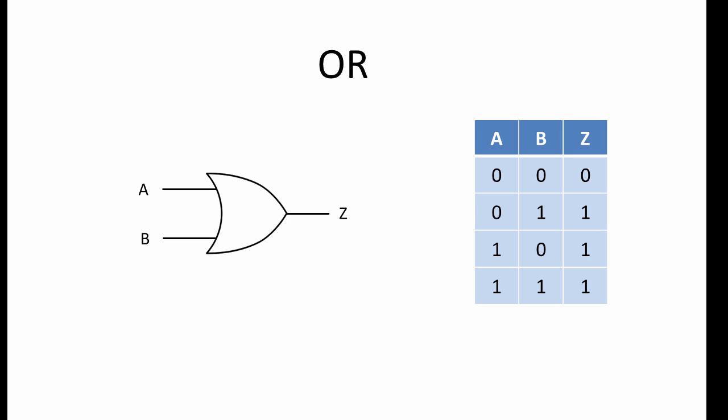And finally, this is the OR gate. When one or the other input is a 1, the output is a 1. Also, when both inputs are 1, the output is a 1.